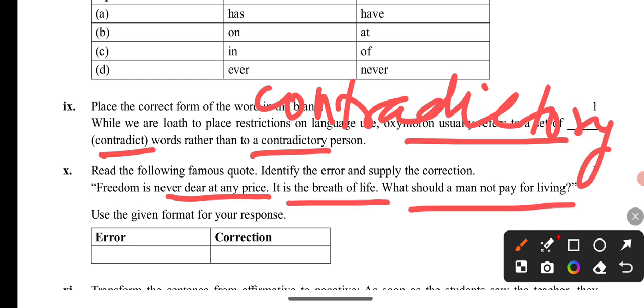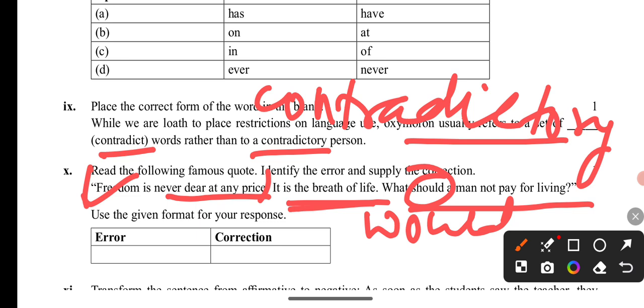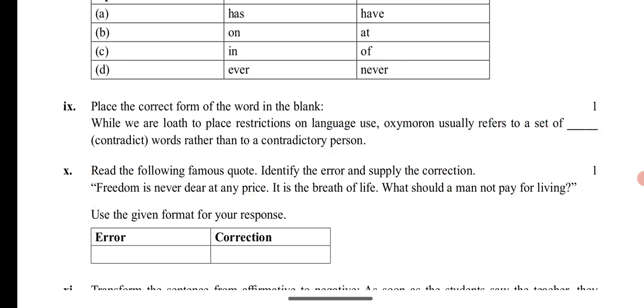Question 11: 'Freedom is never dear at any price — it is the breath of life.' This is a popular quote by Mahatma Gandhi. The question asks: what should a man not pay for living? Because of the context of morality and freedom, 'would' is used — so the answer is: 'What would a man not pay for living?'